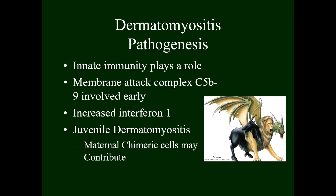The pathophysiology involves innate immunity; the membrane attack complex C5b through C9 seems to be involved early, and there is an increase in interferon type 1. Interestingly, in juvenile dermatomyositis, maternal chimeric cells may contribute — individuals with two different genetic sources of cells in their body. Some maternal cells may remain in the child's body and cause a graft-versus-host type disease. This mechanism is also thought to contribute to scleroderma.